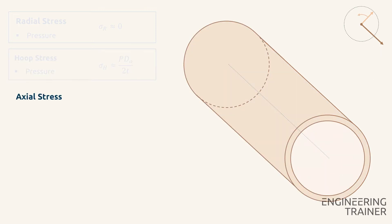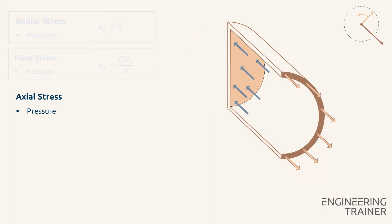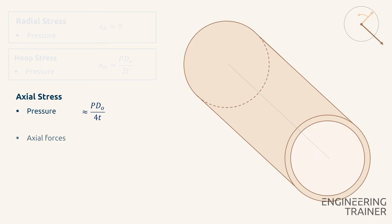This is different for the axial stress. We've seen that the pressure contributes to the axial stress according PD over 4T. But also other loads like external axial forces can cause an axial stress. An example could be the weight loads of connecting pipe segments. This contribution can generally be calculated as the external axial force divided by the cross-sectional area of the pipe.